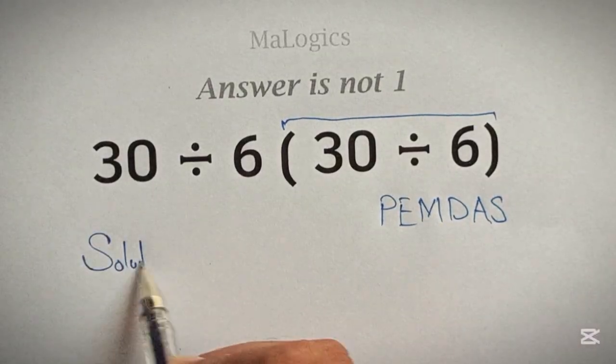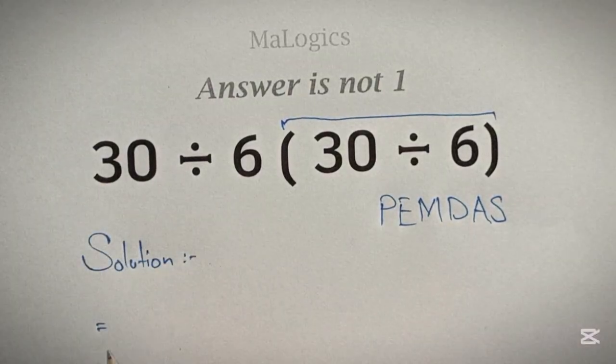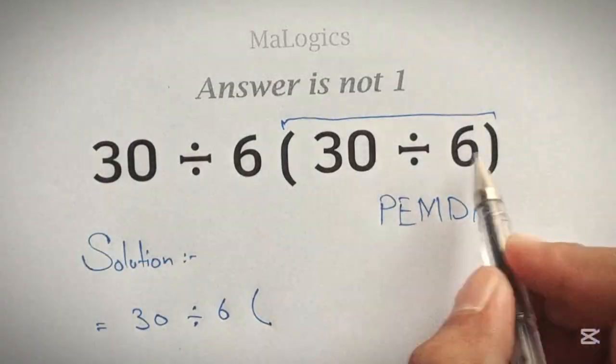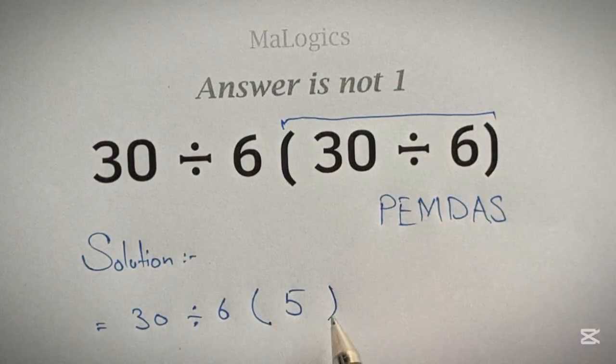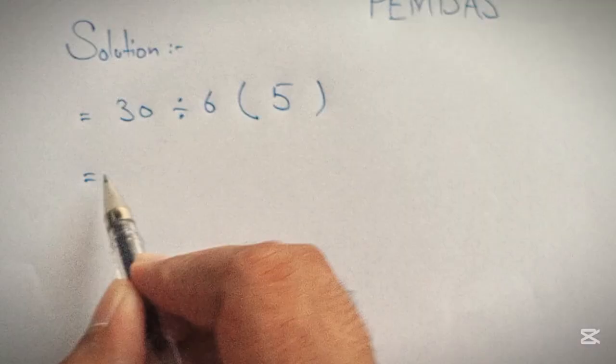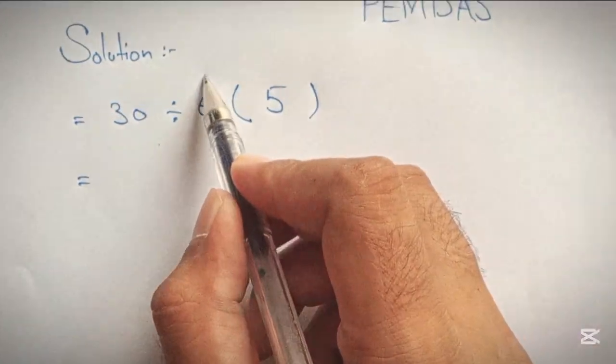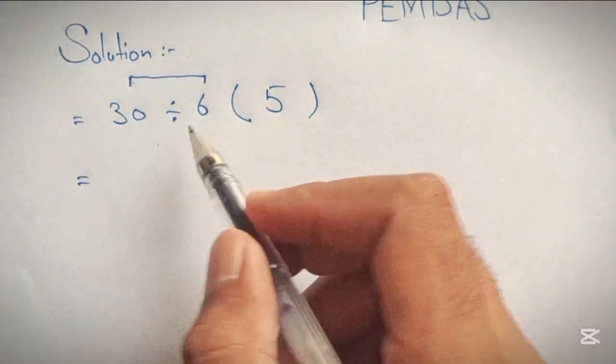Let's start with its solution. Here, 30 divided by 6 times 5, again according to order of operation. Here, division has higher priority than multiplication. So, we will do division first, then multiplication.